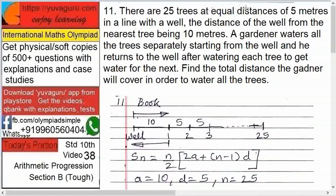There are 25 trees at equal distance of 5 meters in a line with a well. The distance of the well from the nearest tree is 10 meters. A gardener waters all the trees separately starting from the well and he returns to the well after watering each tree to get water for the next. Find the total distance the gardener will cover in order to water all the trees.